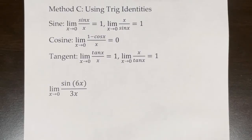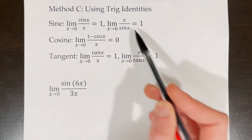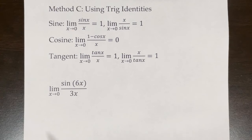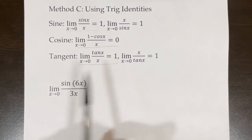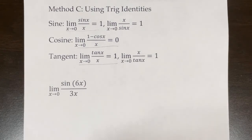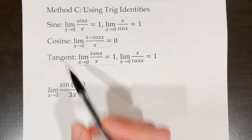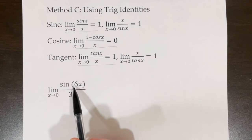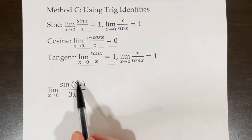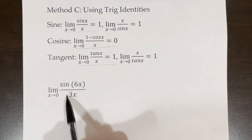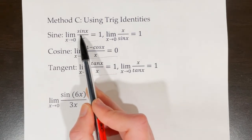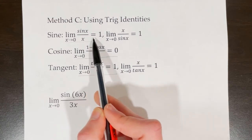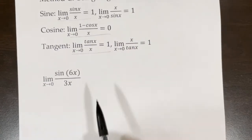Another method for simplifying is using trigonometric identities. The key ones to memorize are the first sine, first cosine, and first tangent identities. The goal is to get the function to a point where you have the same expression inside the sine parentheses as in the denominator — specifically, sine of a number over that same number — so that it equals 1 and simplifies the expression.